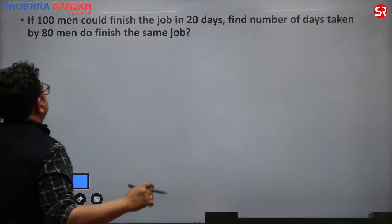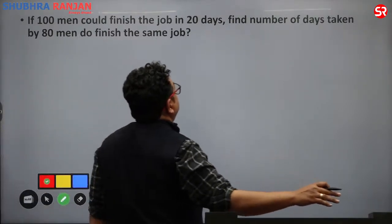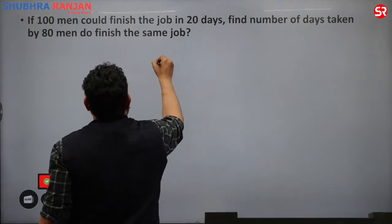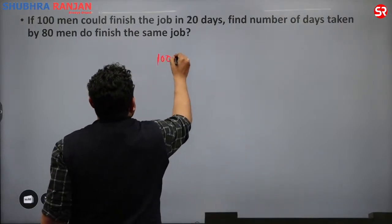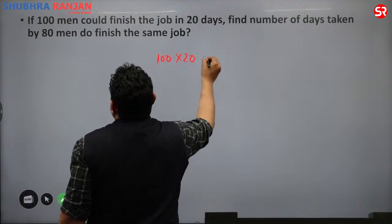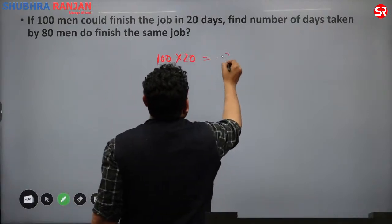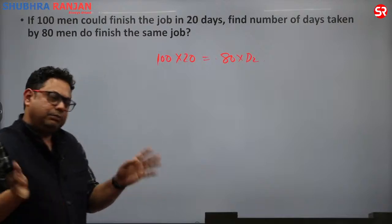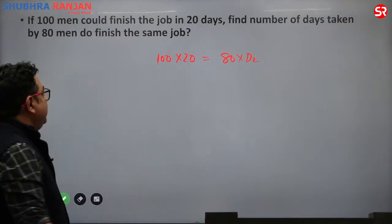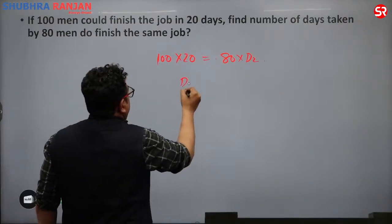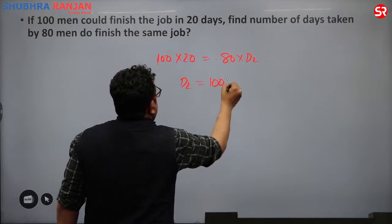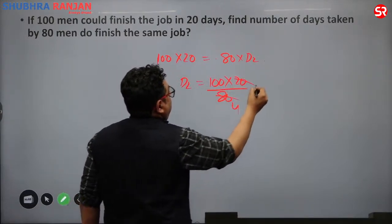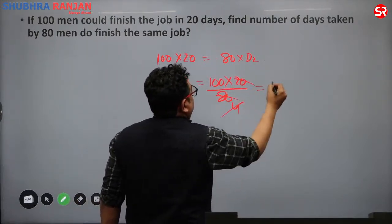Question one: if 100 men could finish a job in 20 days, find the number of days taken by 80 men to do it. Solution: 100 into 20 equals 80 into D2, so D2 comes out to be 100 into 20 upon 80, which is 25 days.